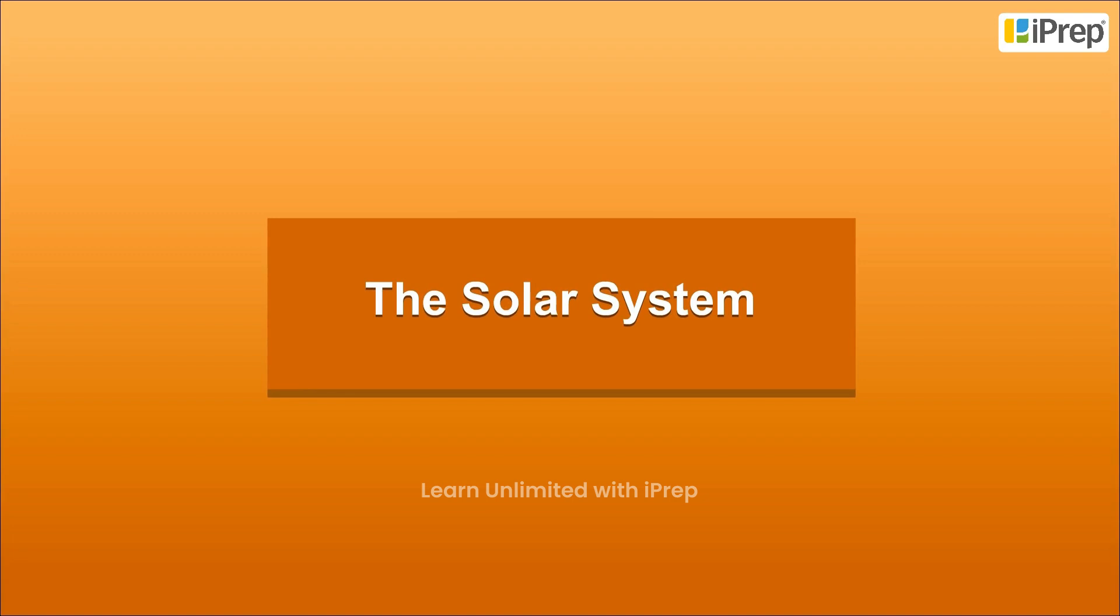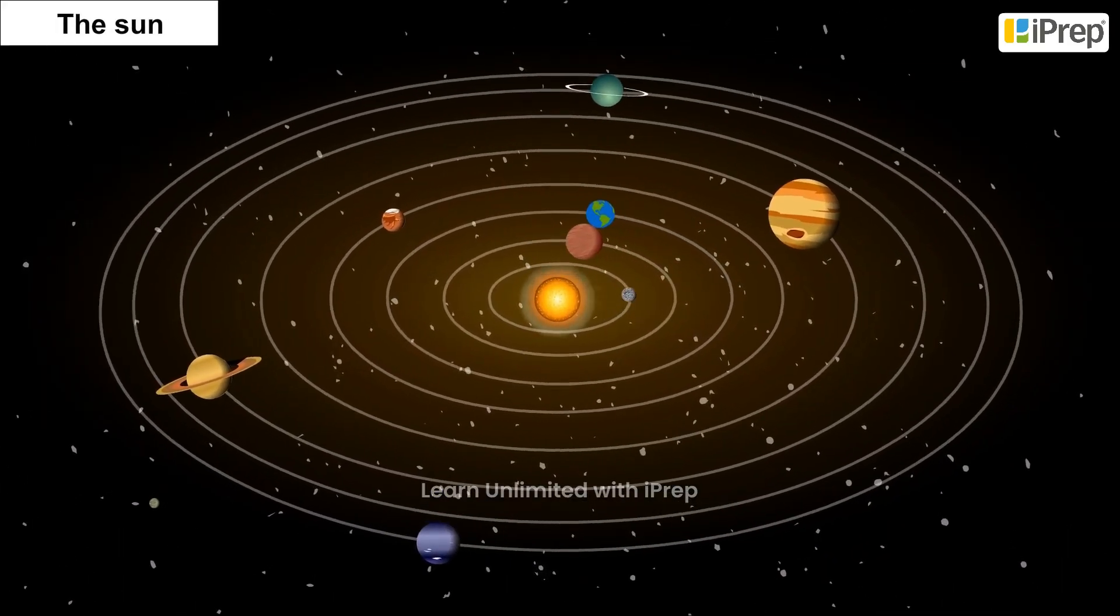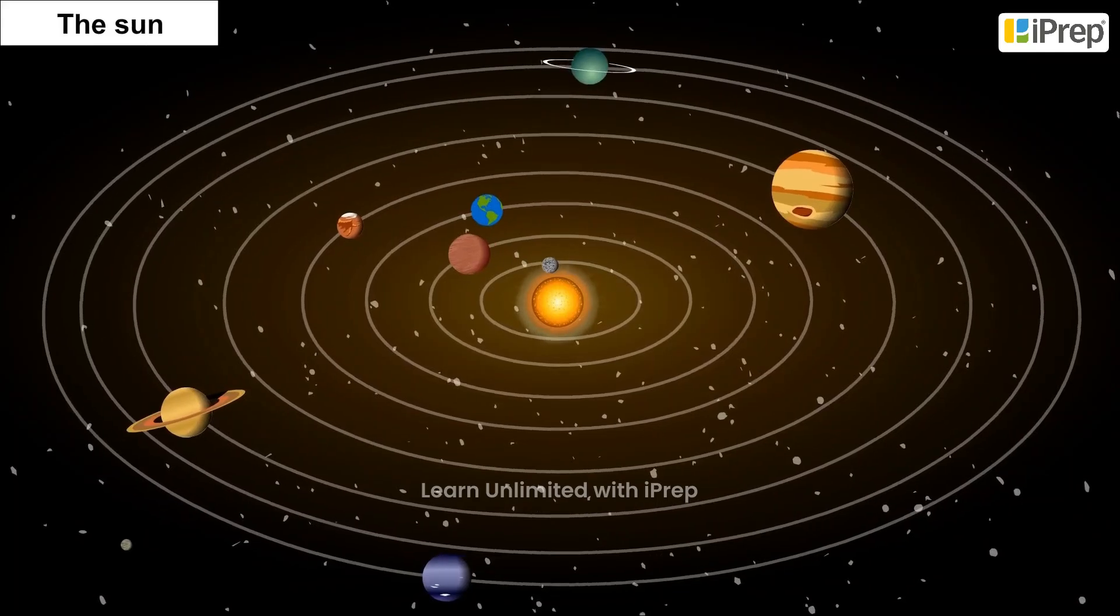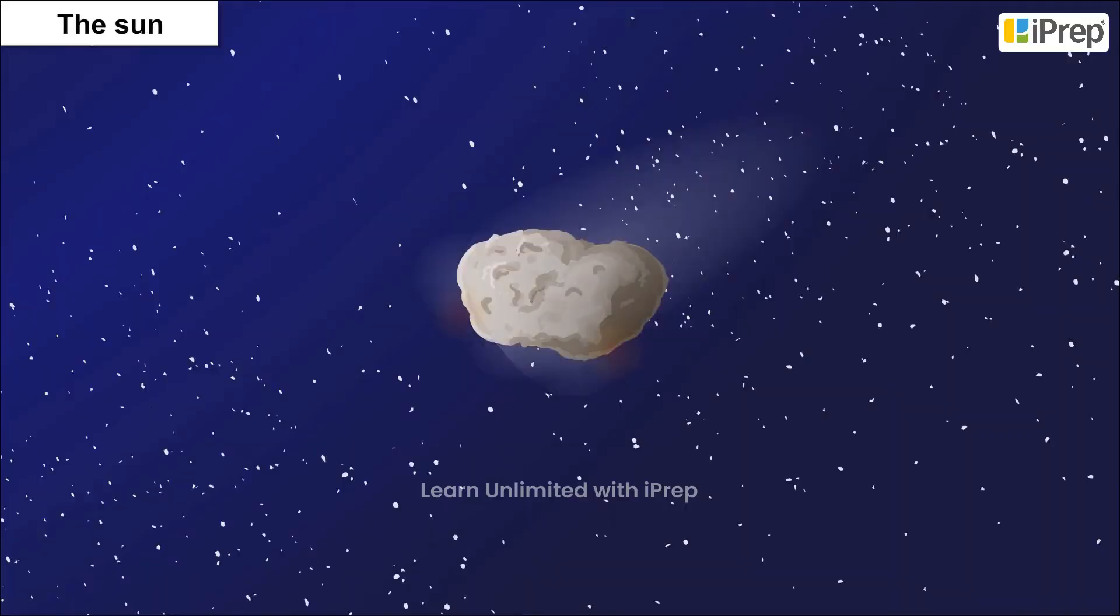The Solar System: The Sun, the 8 planets, satellites and some other celestial bodies known as asteroids and meteoroids form the solar system.